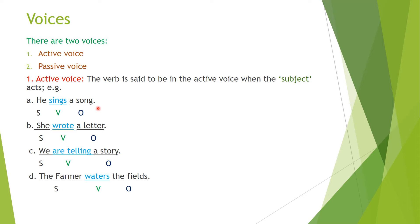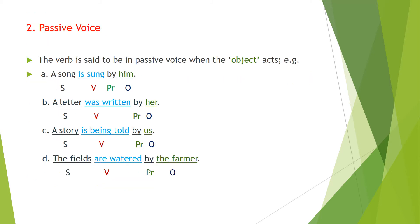The third example: 'We are telling a story.' We is the subject, 'are telling' is the verb, and a story is the object. The fourth example: 'The farmer waters the fields.' In all these four examples, the subject acts himself or themselves — the subject performs the action. This was an example of active voice. So now, passive voice.